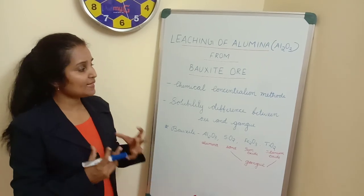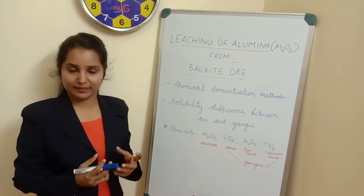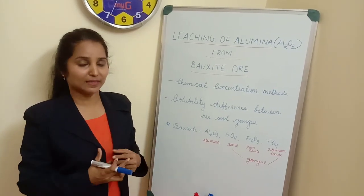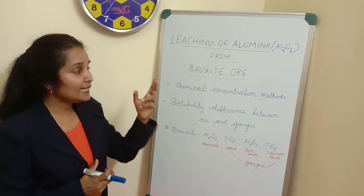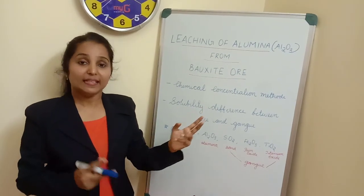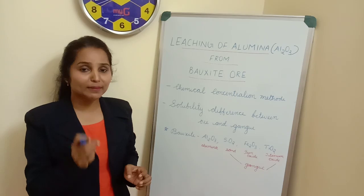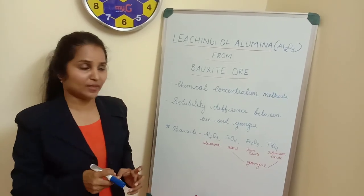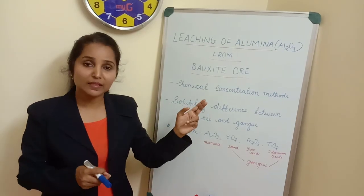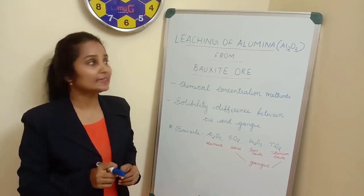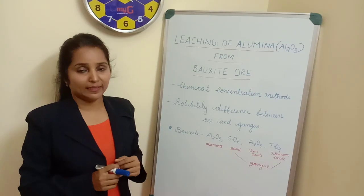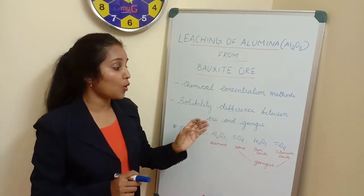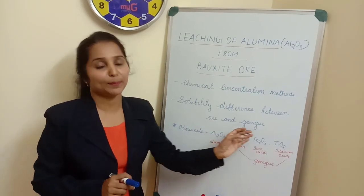Why is it known as chemical concentration method? Because all other concentration methods are using physical methods. In leaching of alumina, a suitable chemical reagent is used for the concentration of ore. So it is known as chemical concentration method of ore.